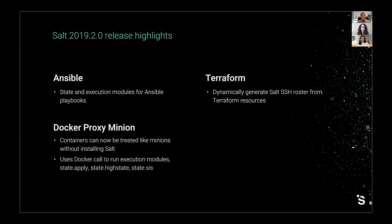Now I want to hand the time back to Megan to talk about some of the other features in this release. Some of the integrations added into Salt — one was Ansible. This was previously supported, but now we are adding the ability to interact with playbooks in both state and execution modules. There was also a SaltSSH Terraform roster that was added, and this is going to allow users to interact with their hosts and provision them with both SaltSSH and Terraform. Another great feature that was added was the Docker proxy minion. Essentially, containers can be treated as minions without Salt actually being installed — what is going on underneath is Docker.call, which is calling these execution modules. It can run state.sls, apply, and high state.